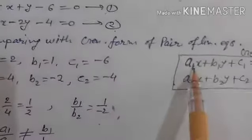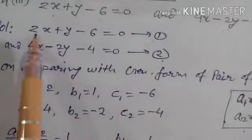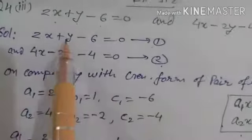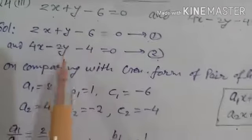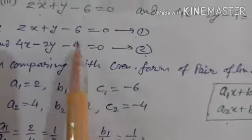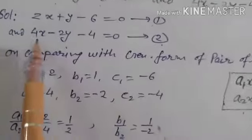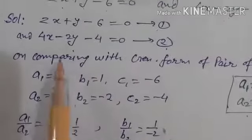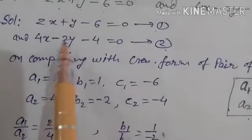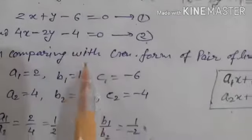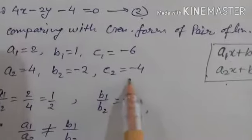Comparing with the general form: a1 equals 2, b1 — the coefficient of y — equals 1, and c1 equals minus 6. For the second equation: a2 equals 4, b2 equals minus 2, and c2 equals minus 4.